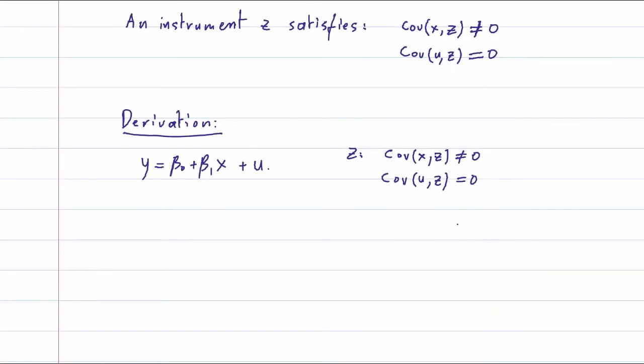So I'm going to take the covariance between y and z. So on the other side, we have covariance beta zero plus beta one x plus u and z.